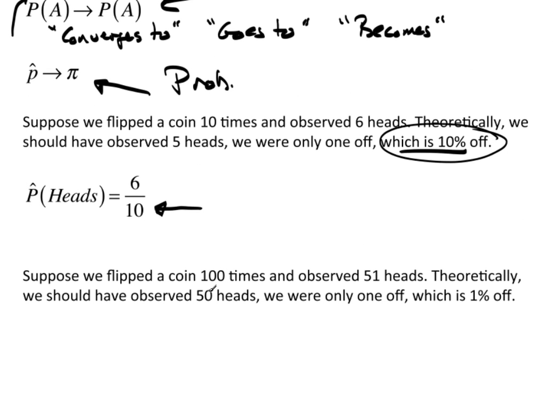Now, if I did it 100 times and observed 51 heads, I'm still off by one. Theoretically, we should have observed 50 heads, but we're only off by one again, which is now only 1% off.